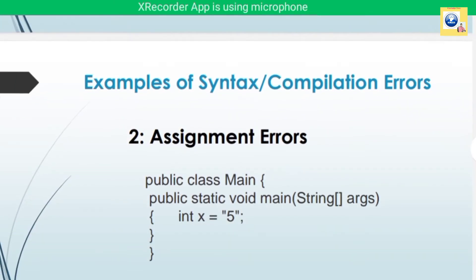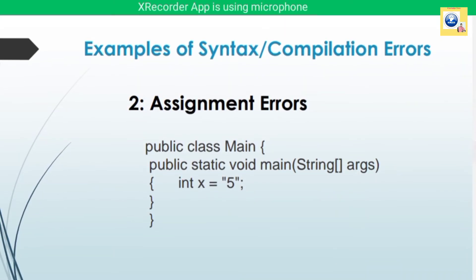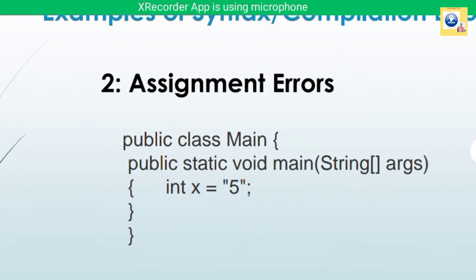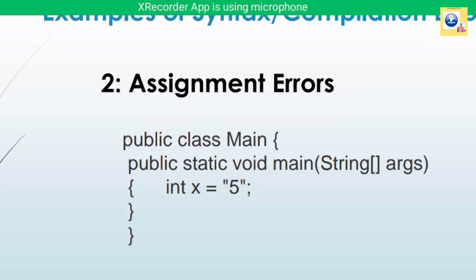Another example of a compilation error is an assignment error. Here, 'int x' is an integer variable but the value assigned to it is a string. This error occurs because the value is not compatible — the variable needs a numerical value but a string value has been given.